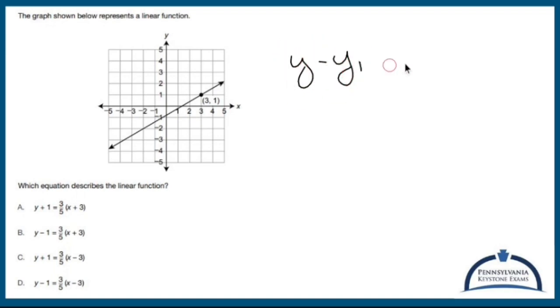y minus y sub 1 equals m times the quantity x minus x sub 1. Now y is y, x is x. We have to find what m, x sub 1, and y sub 1 are.